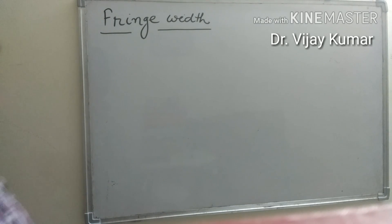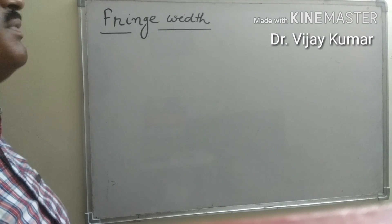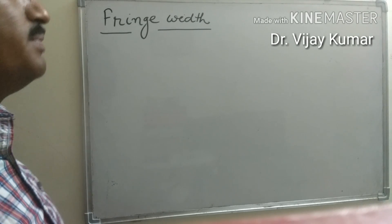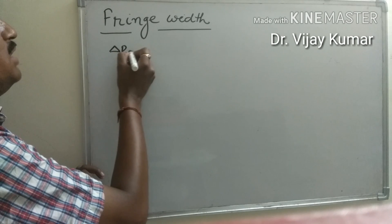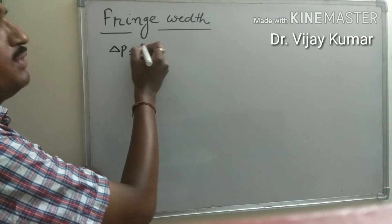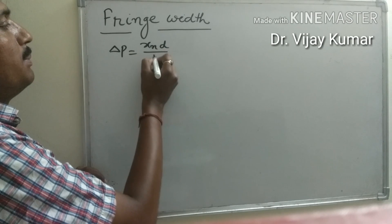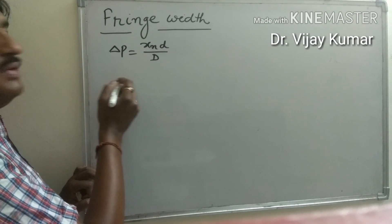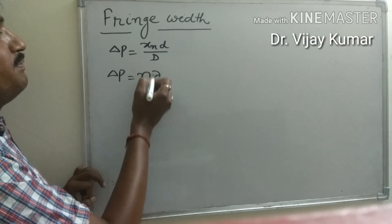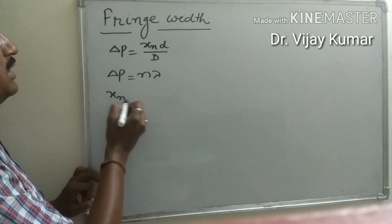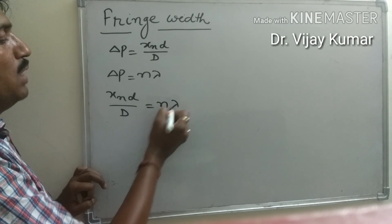Welcome to the second part video on fringe width. In this video we determine the fringe width of bright fringes. In the previous video we determined that the path difference between two interfering rays is xn·d upon D. For bright fringes, the path difference between the rays equals n·lambda, so xn·d upon D becomes equal to n·lambda.